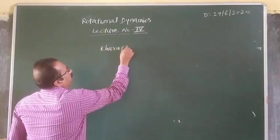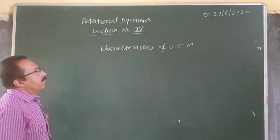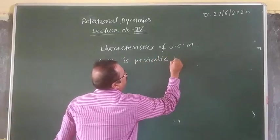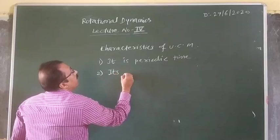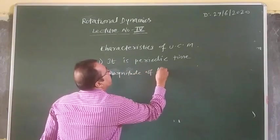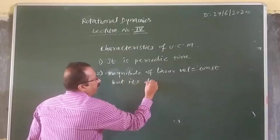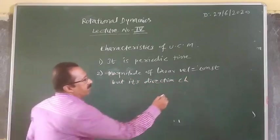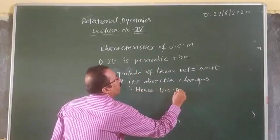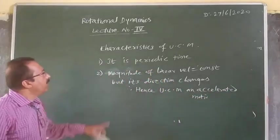Characteristics of UCM: It is a periodic motion with constant angular speed. The magnitude of linear velocity is constant, but its direction changes continuously. Hence, UCM is also an accelerated motion. The first thing is that UCM is an accelerated motion.